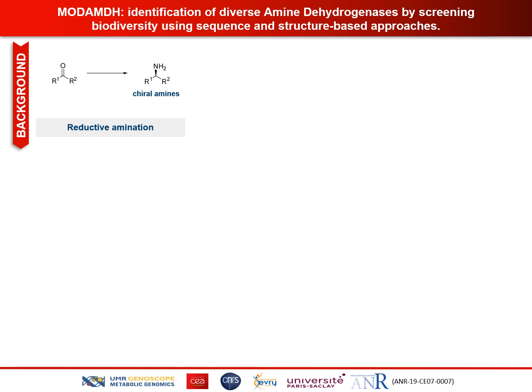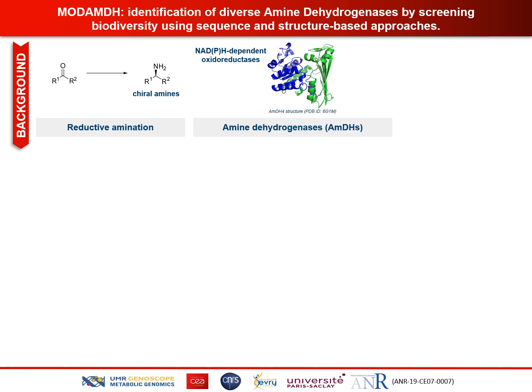There are many biocatalytic ways to obtain chiral amines, but our team is mainly interested in native amine dehydrogenases, also called AMDH, which are NADPH-dependent oxidoreductases performing the reductive amination of ketones into chiral amines using ammonia and a nicotinamide factor as a hydride donor.